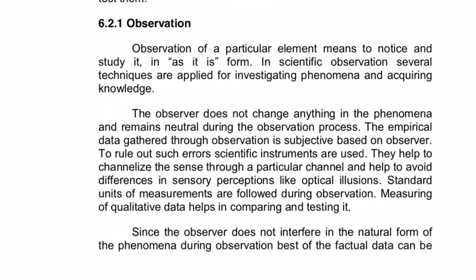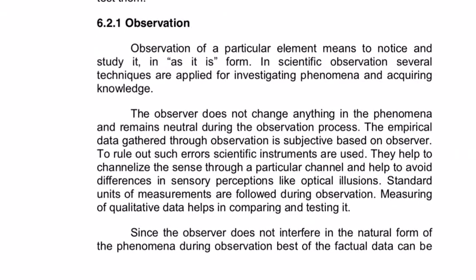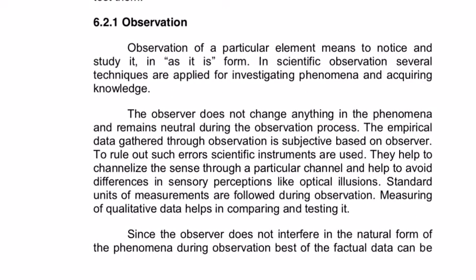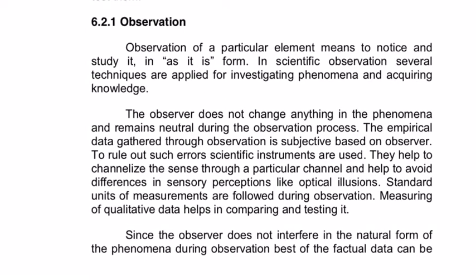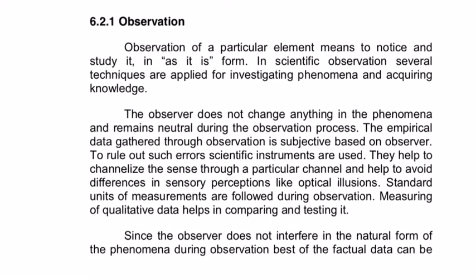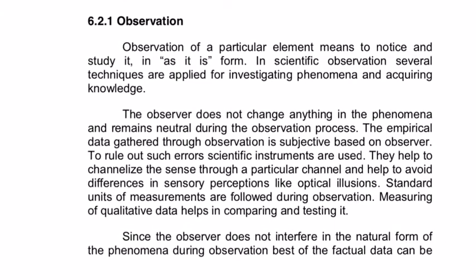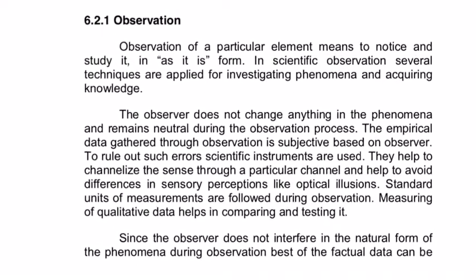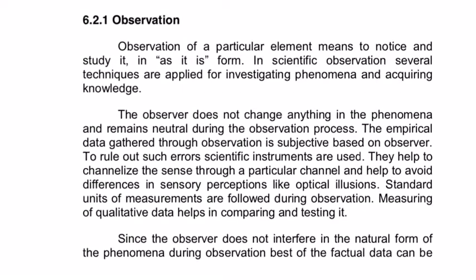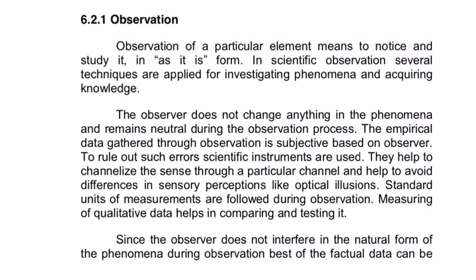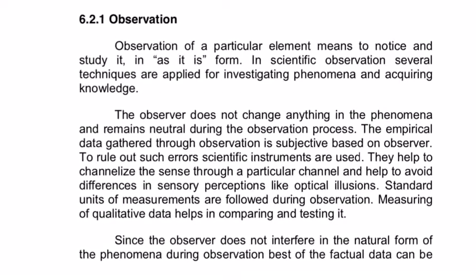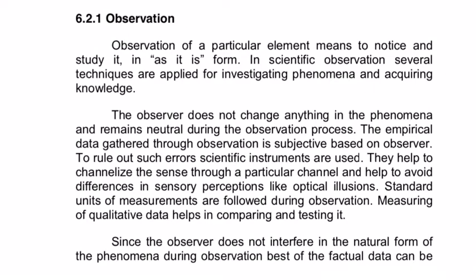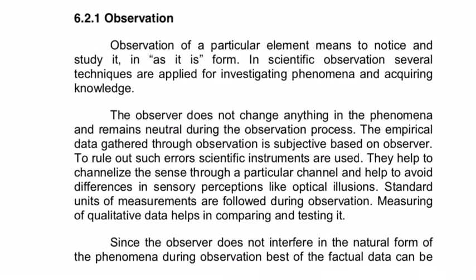6.2.1 Observation. Observation of a particular element means to notice and study it as it is formed. In scientific observation, several techniques are applied for investigating phenomena and acquiring knowledge. The observer does not change anything in the phenomena and remains neutral during the observation process. The empirical data gathered through observation is subjective based on the observer. To rule out such errors, scientific instruments are used. They help to channelize the sense through a particular channel and help to avoid differences in sensory perceptions like optical illusions.